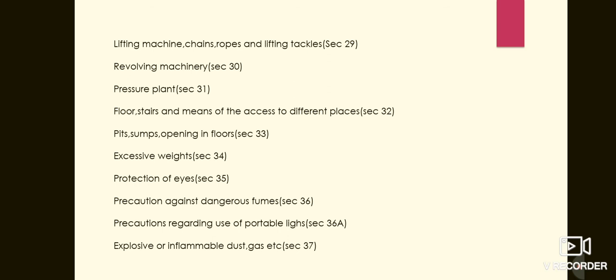Next is precaution regarding use of portable light, covered in session 36a. No portable electric light or any other electric appliance of voltage exceeding 24 volts shall be permitted for use inside any chamber, tank, hose, pit, pipe etc.